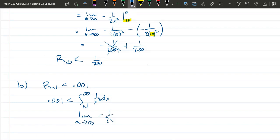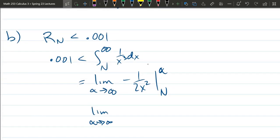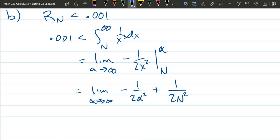It's all the exact same work as above. Negative one over 2x squared from big N to alpha. So we have, plug in alpha first. This term will go to zero. 2 alpha squared is minus a negative, so it's plus one over 2N squared. So the first term that goes to zero, so that's disappearing. And we just get one over 2N squared.